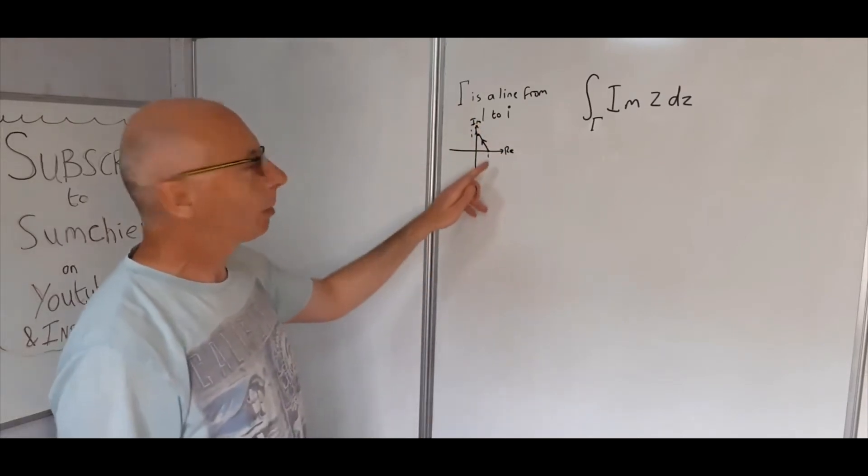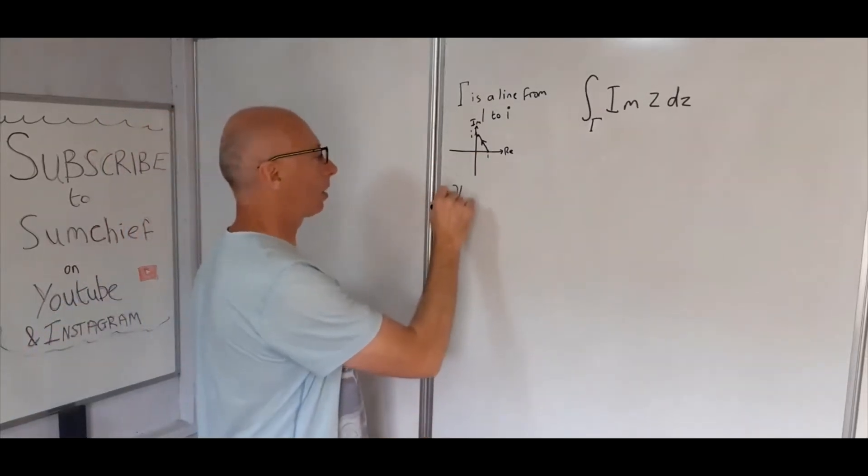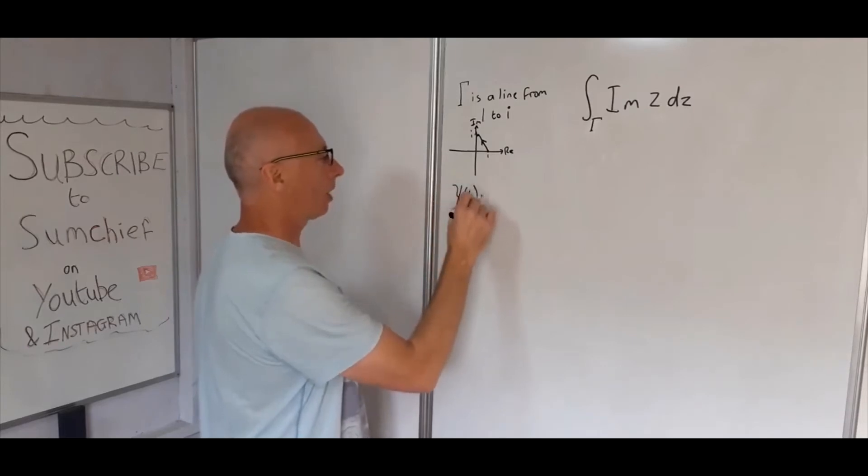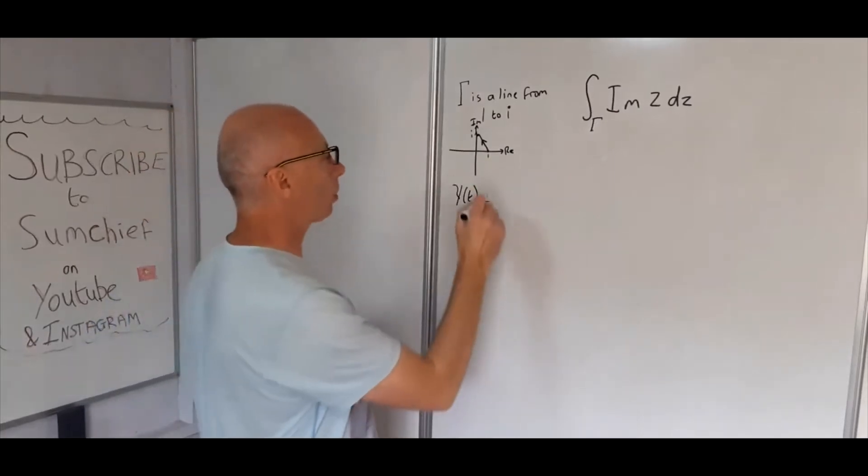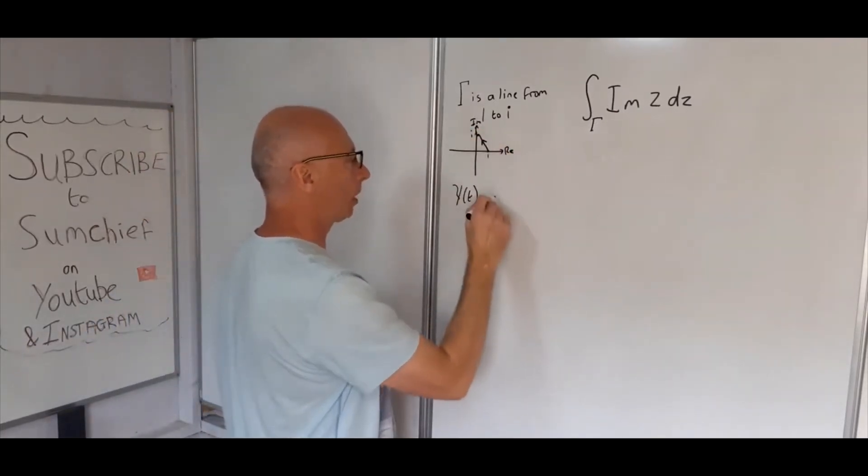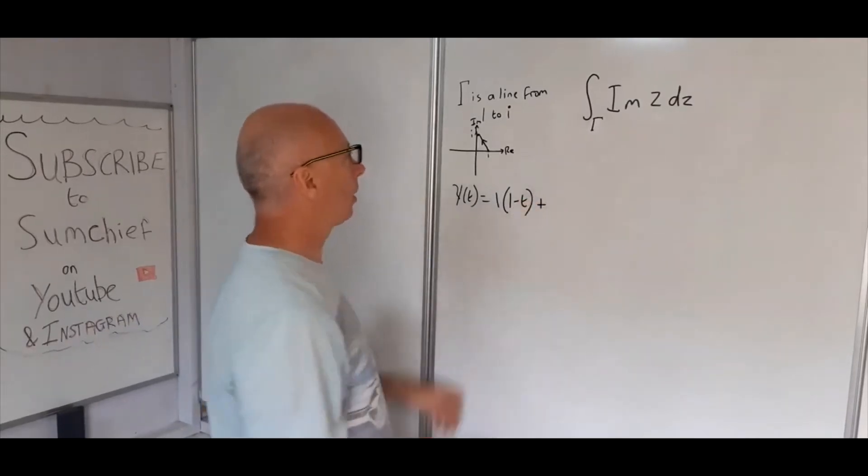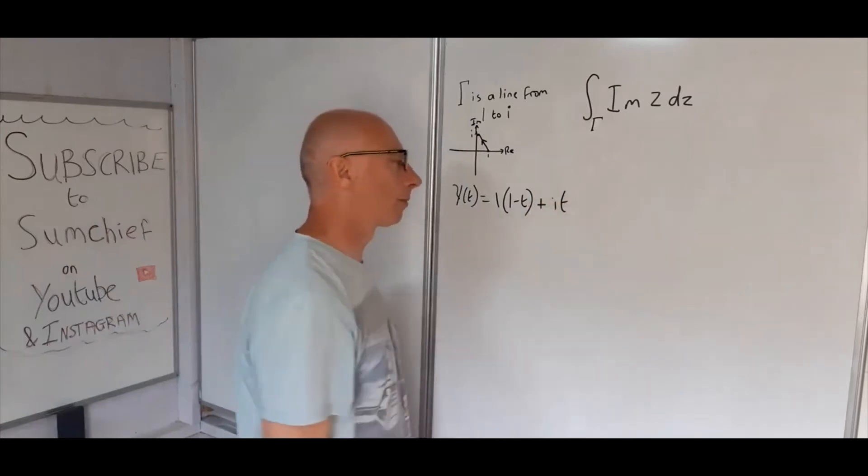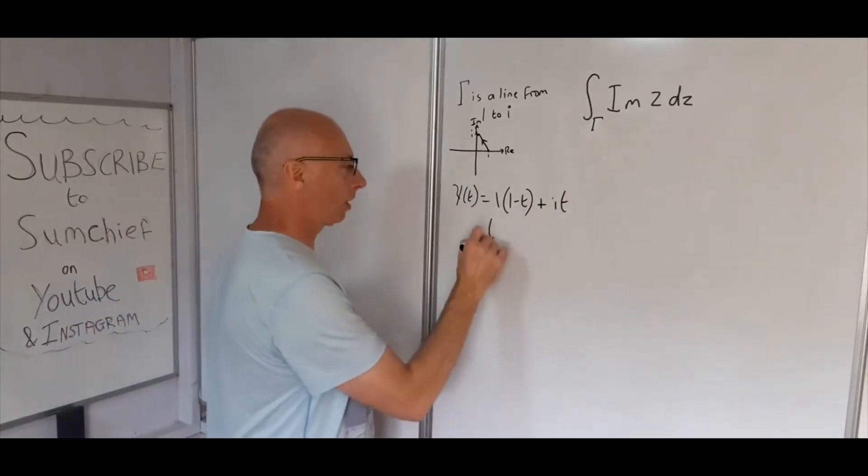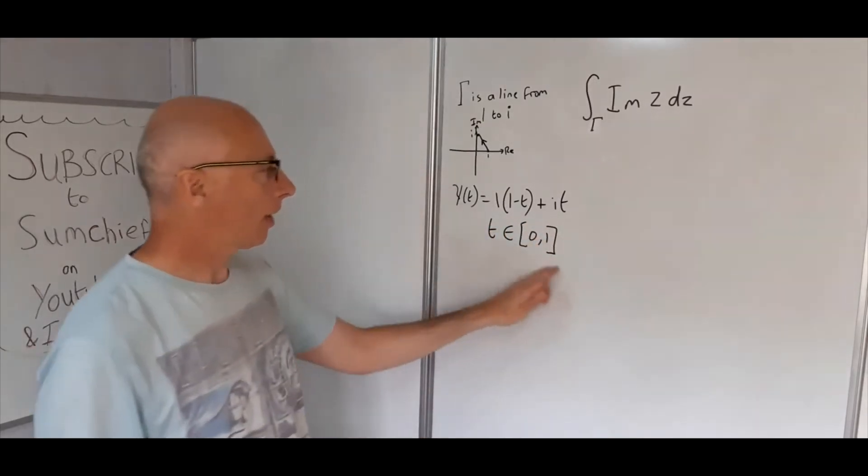To parameterize this line, we use this formula: gamma(t) equals the starting point, which we'll call 1, times (1 - t), then add on the finish point which is i and multiply that by t. And t is in [0, 1], and that gives us our parameterization.